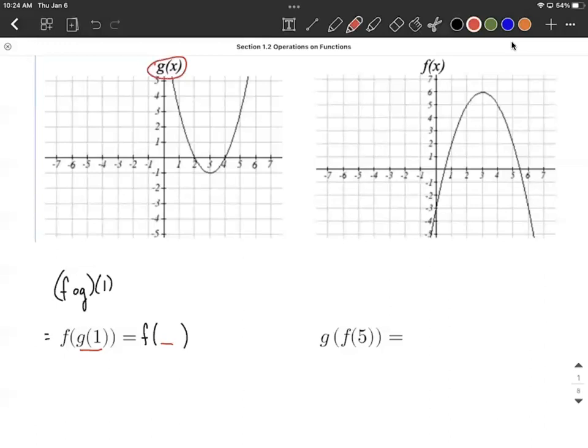So on our graph, we're going to be plugging in an x value of one, and as we plug that into g, we're going to be outputting the y value is going to be three. So that can go inside of our function f down below inside that bigger set of parentheses.